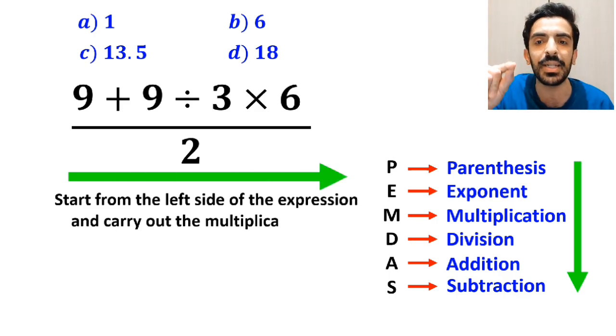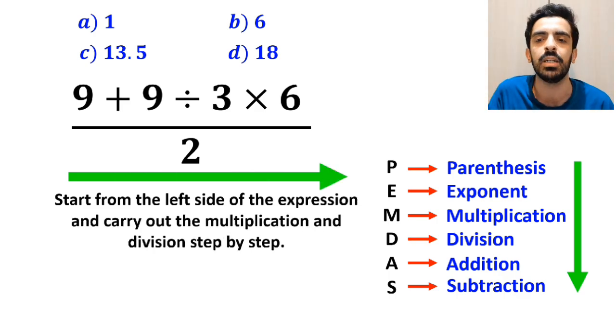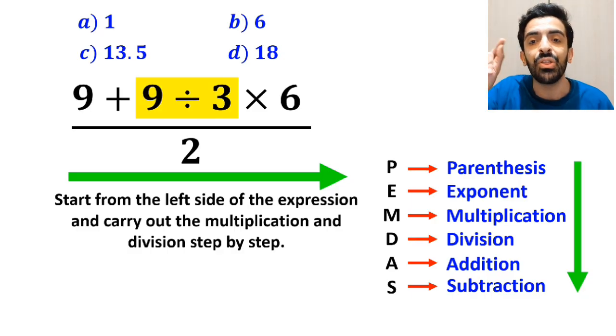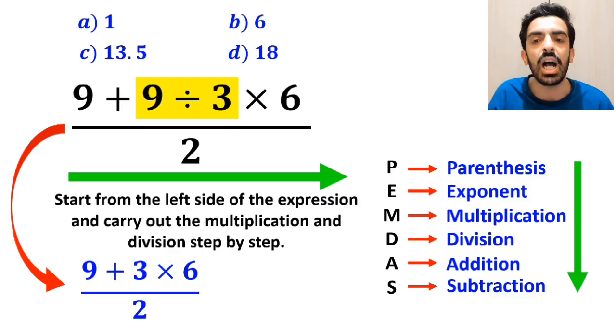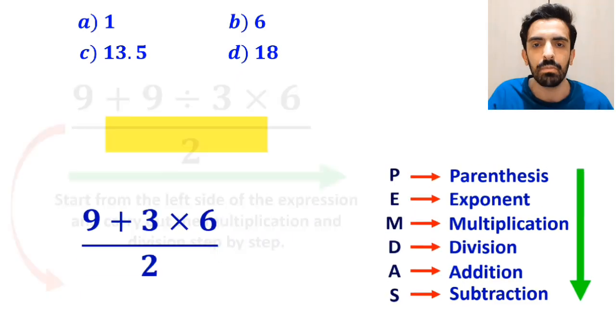Of the expression and carry out the multiplication and division step by step. So first we go for the division between 9 and 3, and we can write the whole expression as 9 plus 3 times 6 over 2.